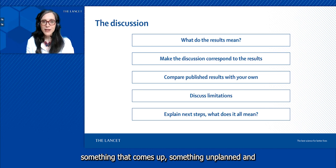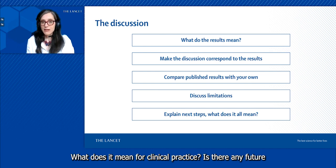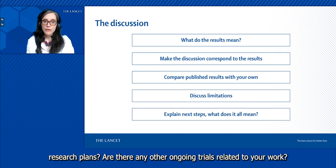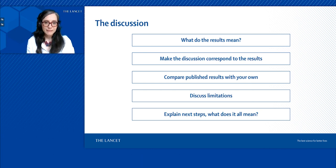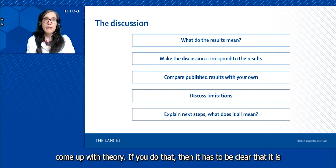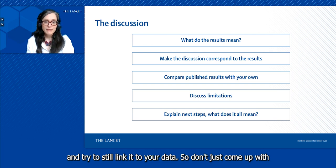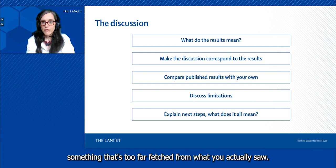You should also discuss limitations. No study is perfect, there's always something that comes up, something unplanned. Please do mention this here. Then explain the next steps—what does it mean for clinical practice, is there any future research planned, are there any other ongoing trials related to your work? You can speculate a bit in the discussion, try to explain things, come up with theory. If you do that, then it has to be clear that it is speculative. Say we hypothesize, we think, potentially. Try to still link it to your data, so don't come up with something that's too far-fetched from what you actually saw.